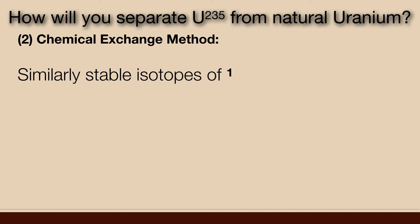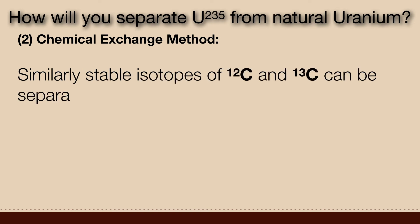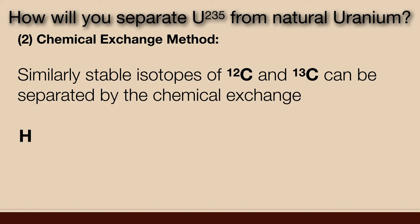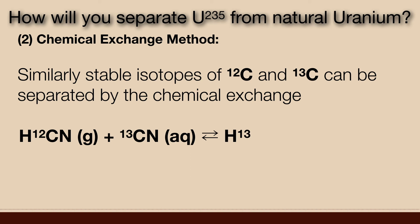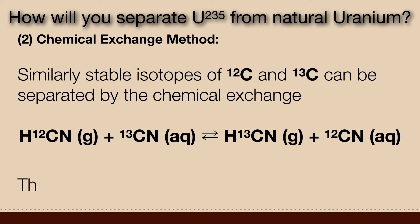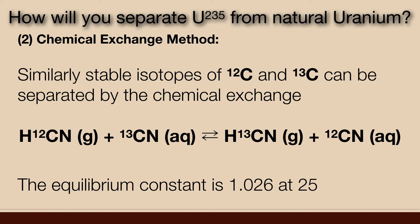Similarly, stable isotopes of carbon-12 and carbon-13 can be separated by chemical exchange. Here, hydrogen cyanide containing carbon-12 in gaseous form combines with cyanide ions of carbon-13 in aqueous medium, producing hydrogen cyanide of carbon-13 in gaseous state and cyanide ions containing carbon-12 in aqueous solution. The equilibrium constant is 1.026 at 25 degrees Celsius.